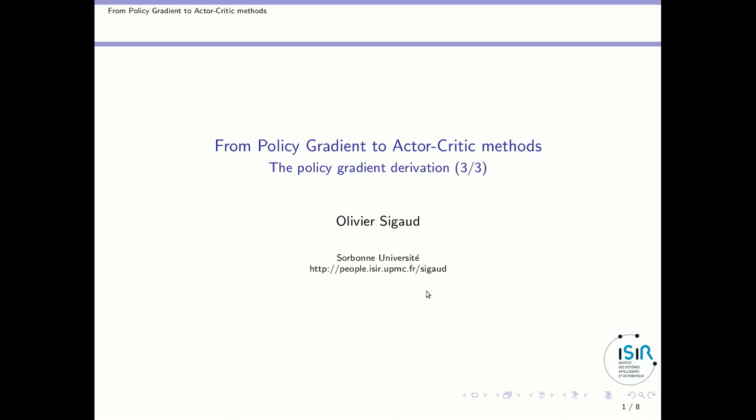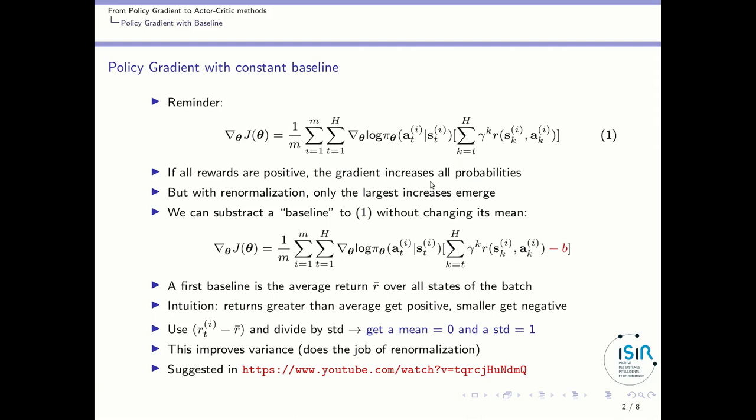Let us now look at the third step of the policy gradient derivation, which consists in adding a baseline to the previous formulae. So as a reminder, we were here, computing the gradient with respect to the policy parameters of the global utility function was obtained through a sum over trajectories of this formula.